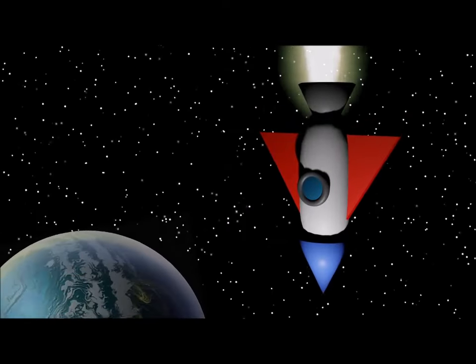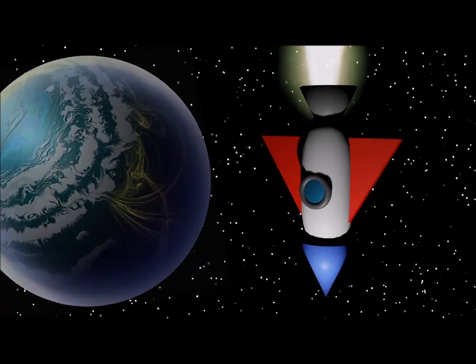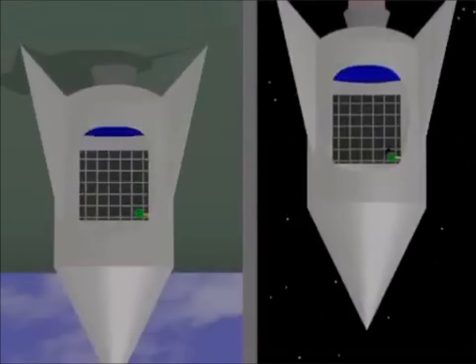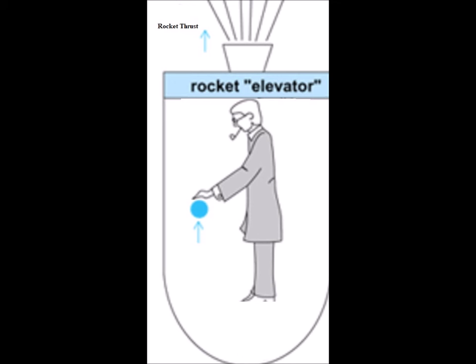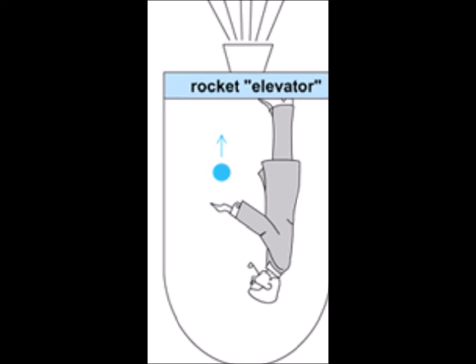Negative gravity would be achieved by reversing the rockets and accelerating the room in the opposite direction. Our heads would then be in gravitational contact with what would be the ceiling, so we would have to turn ourselves 180 degrees to a new orientation to be right side up. This would be negative gravity — at least to us on the rocket. If accelerating at 9.8 meters per second squared, this would be negative 1g.